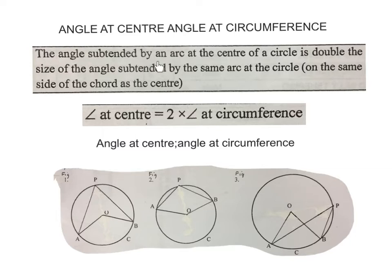It says the angle subtended by an arc at the center of a circle is double the size of the angle subtended by the same arc at the circle, of course on the same side of the chord as the center. But this bracket part you can leave out.